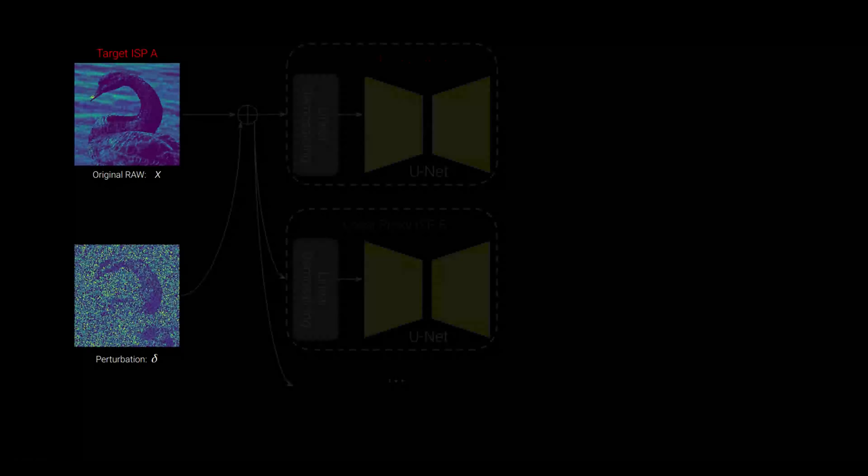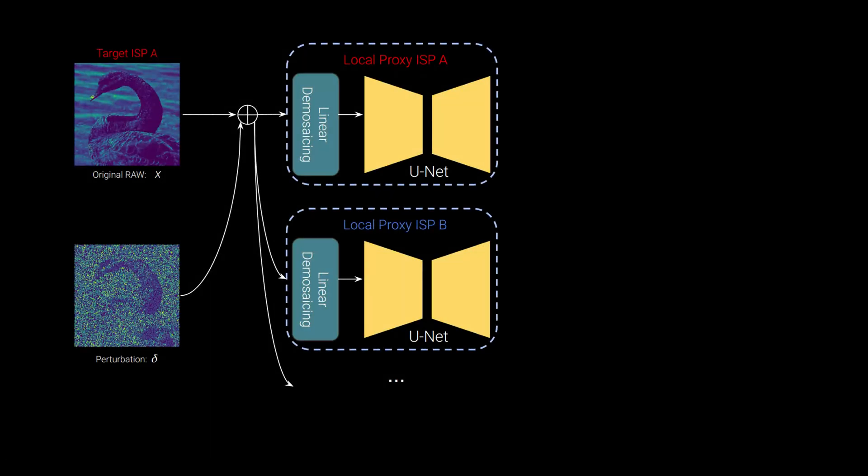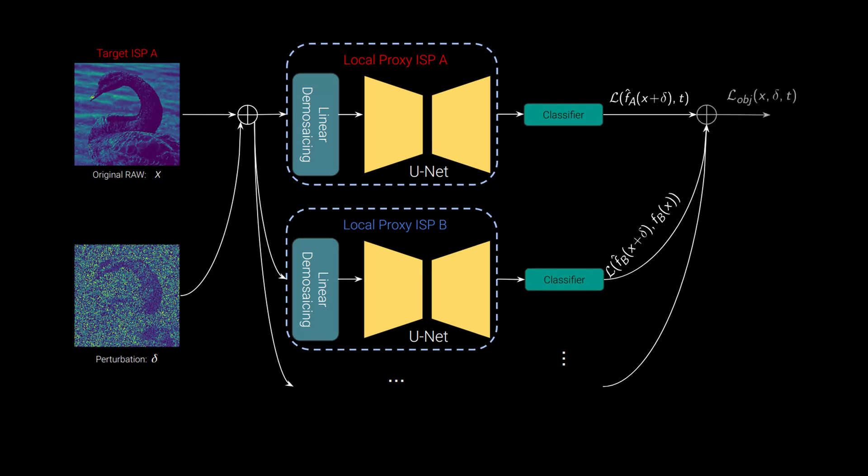Here is the visualization of our method, where we feed the noisy raw image into the proxy pipelines. We are then able to calculate the cost function per pipeline and the total loss. The gradient with respect to delta is then backpropagated and used for updating the attack.